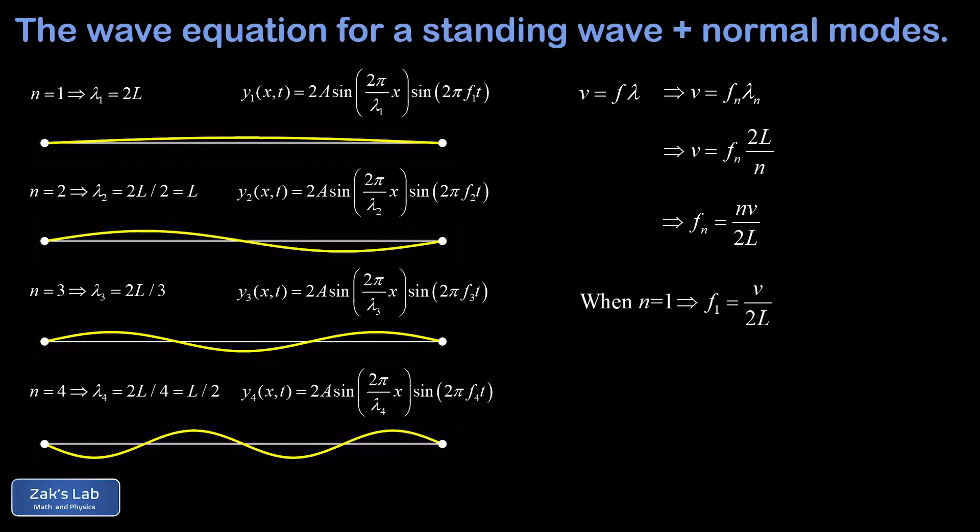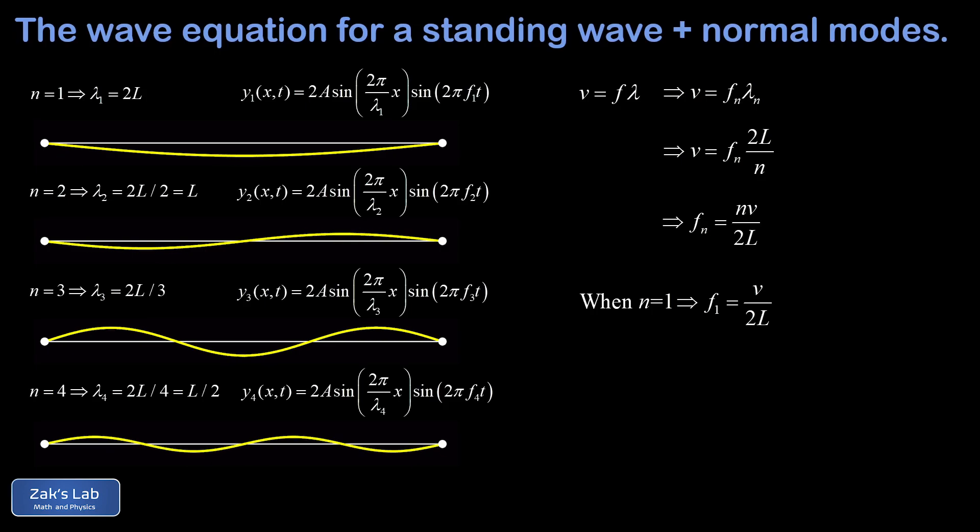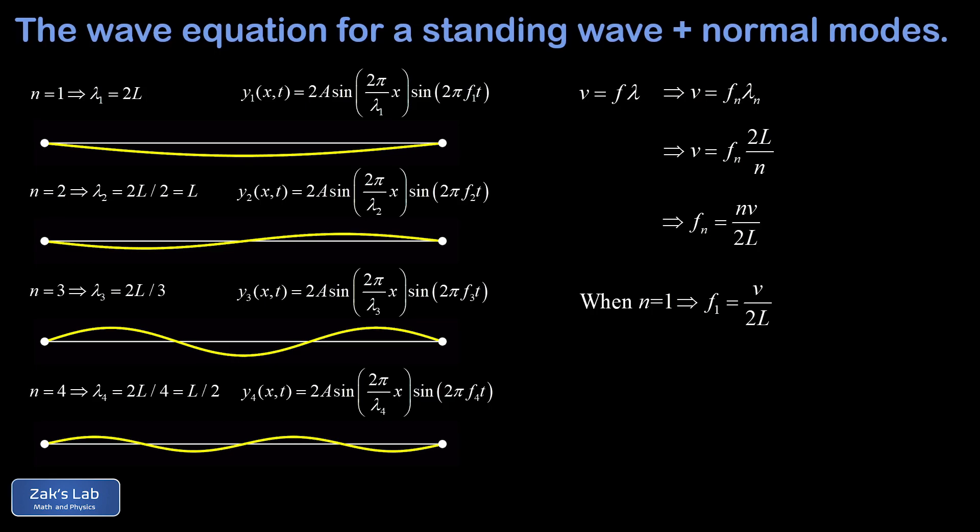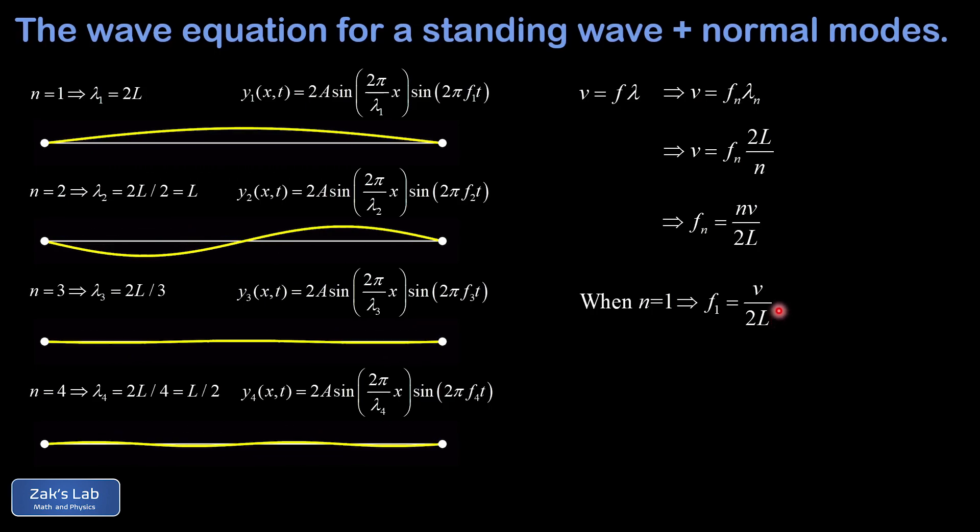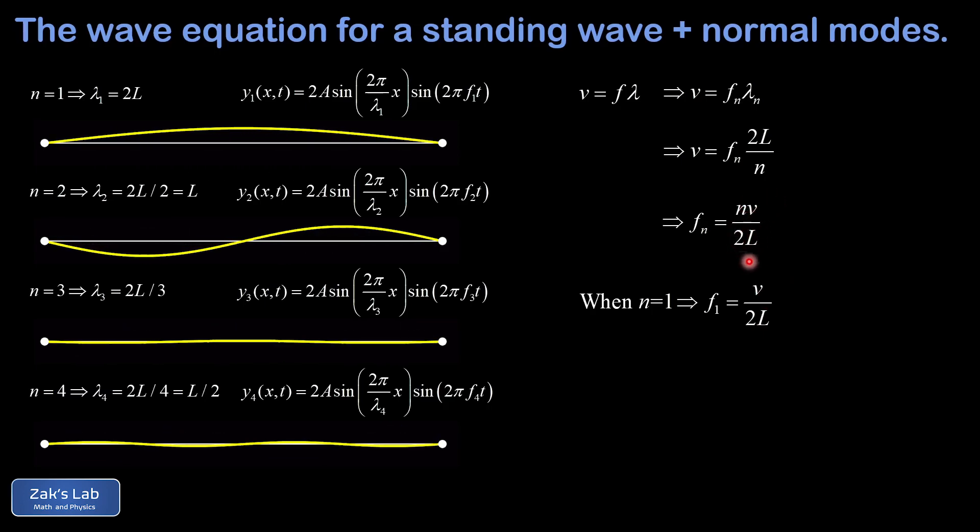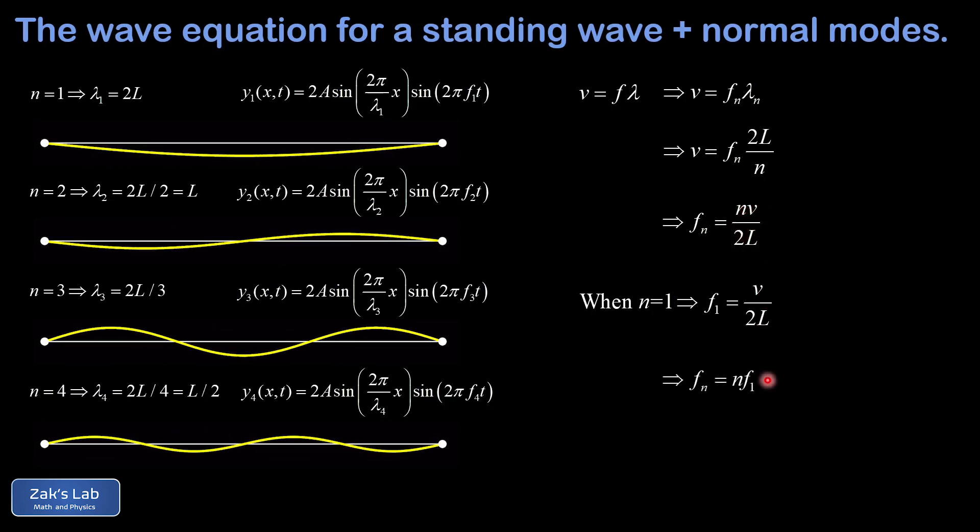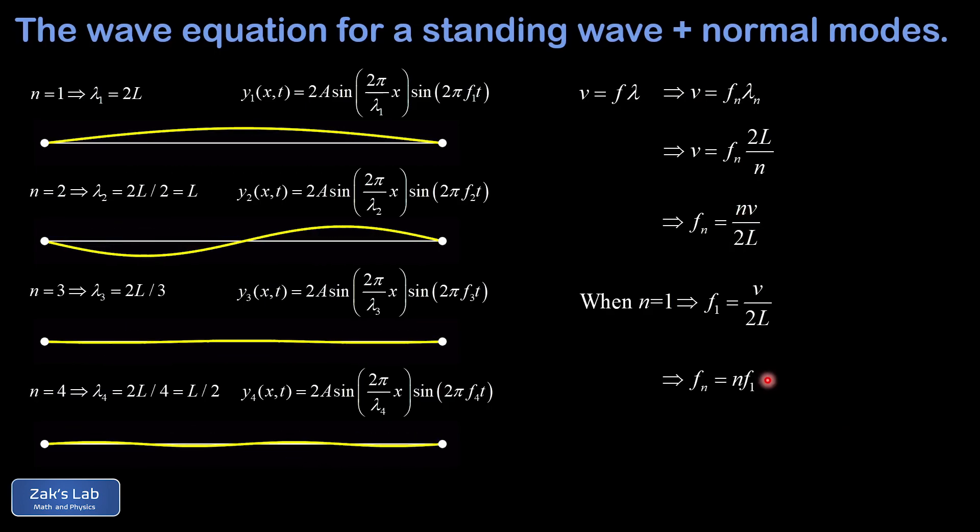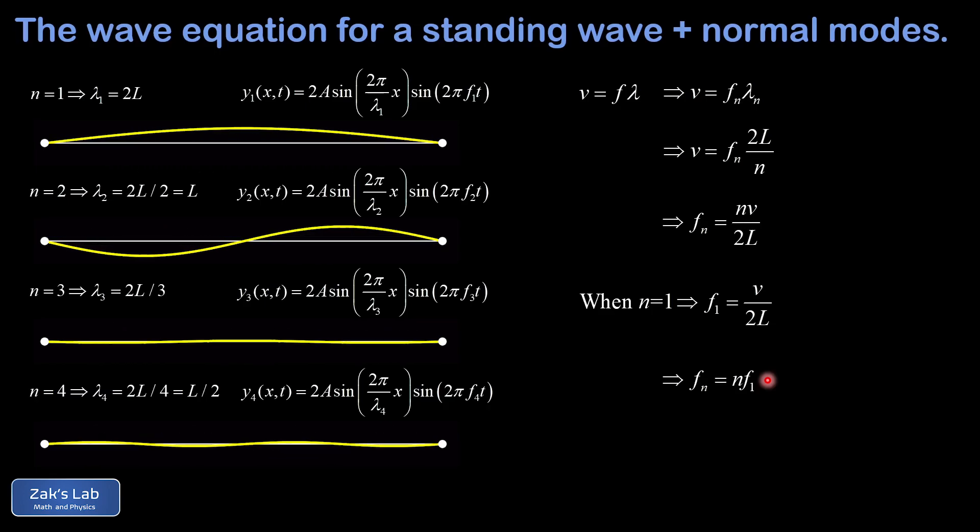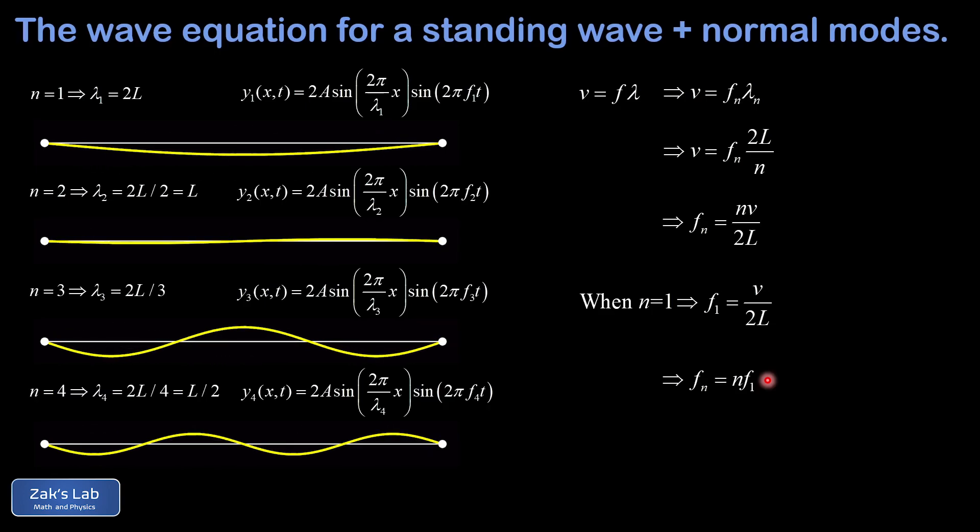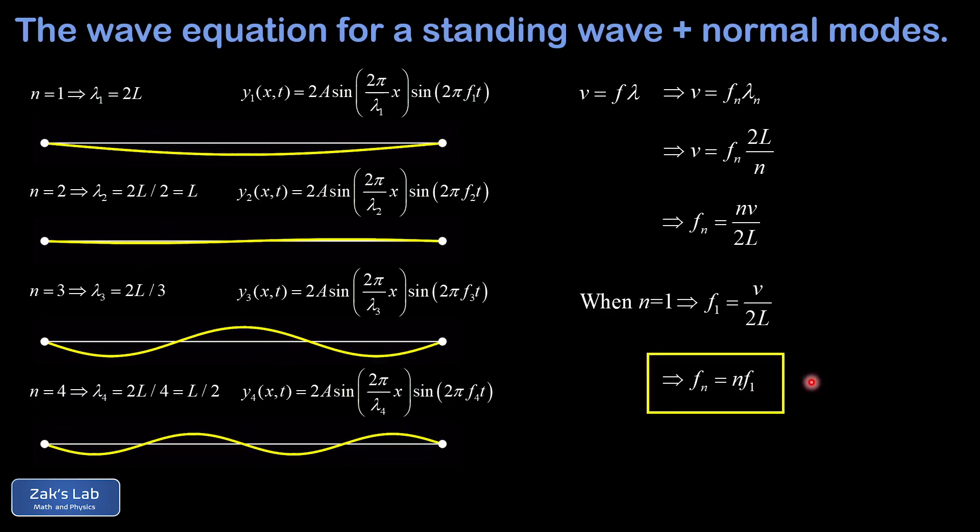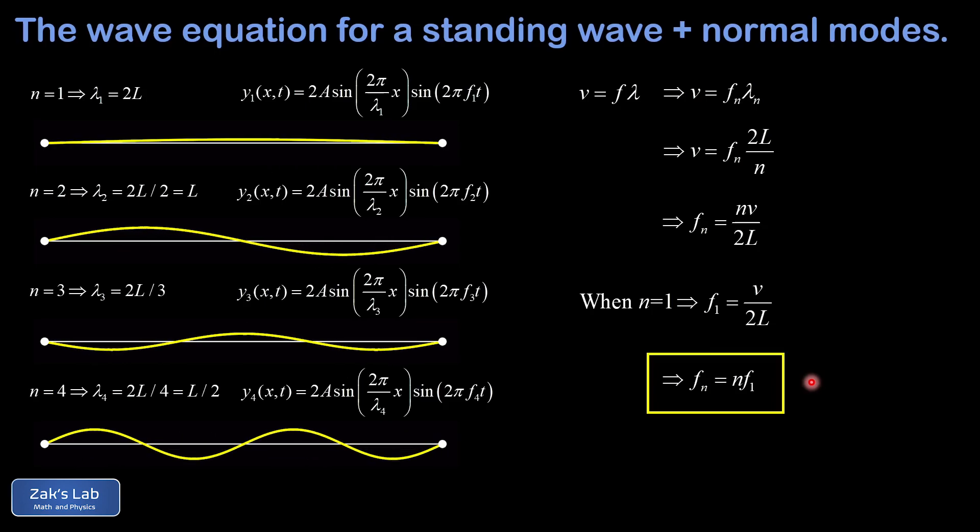But what I want to do with this is sub in n = 1, and we find that the fundamental frequency or the first harmonic is just v over 2L. And we can do a really sneaky little trick here: we can replace v/2L in that previous line with f1, and we find out that the nth harmonic frequency is n times the fundamental frequency, or n times the first harmonic. So every single resonant frequency on the string is just an integer multiple of the lowest resonant frequency on the string. And this is one of the most powerful formulas that we have for problem solving in standing waves.